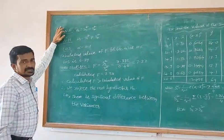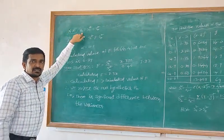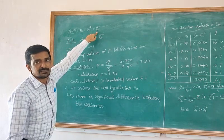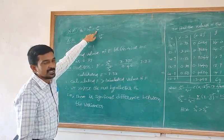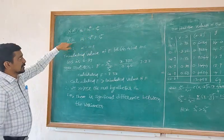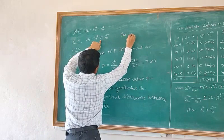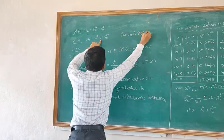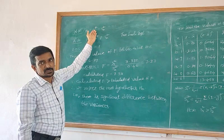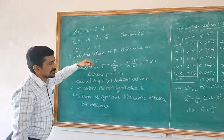Now we apply the test of hypothesis. The null hypothesis H0 assumes there is no difference between the variances of the two populations, meaning S1² equals S2². The alternate hypothesis H1 can be S1² greater than S2², or S2² greater than S1². Next, we find the level of significance with degrees of freedom, where N1 equals 5 and N2 equals 5.